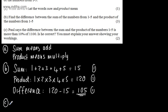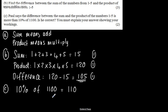So nice and clear on my exam paper, I'm going to write C. The examiner's following this nice and straightforward. Paul says the difference between the sum and the product of the numbers 1 to 5 is more than 10% of 1100. Is he correct? You must explain your answer showing your workings. The first thing I'm going to write down now is 10% of 1100. 10% of 1100 is going to give me 110, for which I would get one mark. 10% I'm simply dividing by 10.